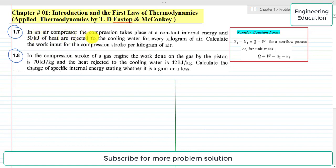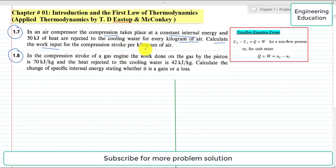The statement of Problem 1.7 is: in an air compressor, the compression takes place at constant internal energy, and 50 kilojoules of heat are rejected to the cooling water for every kilogram of air. Calculate the work input for the compression stroke per kilogram of air.